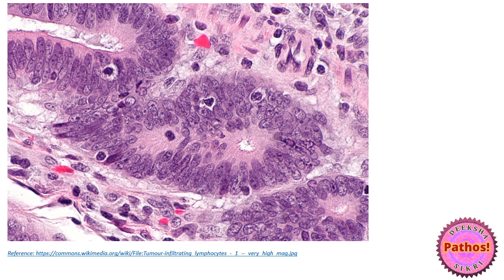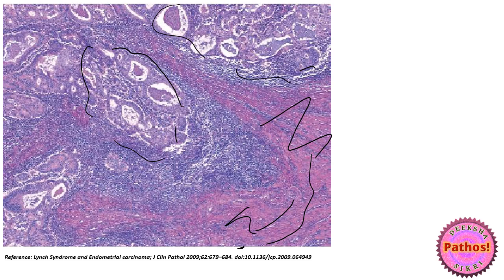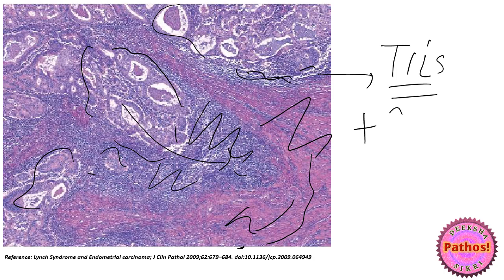If we go to the colon cancer occurring in HNPCC, it tends to have some very specific features. In this photograph, you can make out these are the tumor glands, but in between there are some cells — their nuclei with a little bit of retraction artifact around them. These are T cells, tumor infiltrating lymphocytes. In another photograph, you can see the muscularis, with very ill-disciplined glands invading, and at all of their invading edges there is a lot of blue — also tumor infiltrating lymphocytes. This also resembles Crohn's disease because of its rich lymphocytic infiltrate.